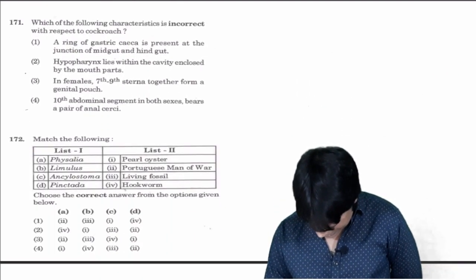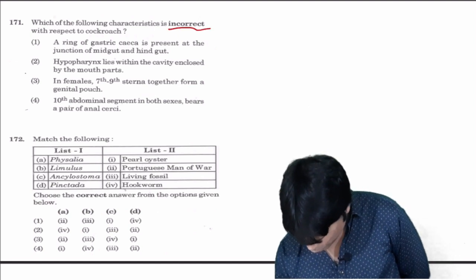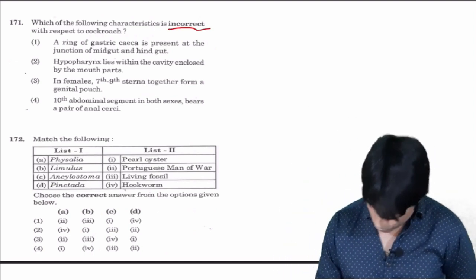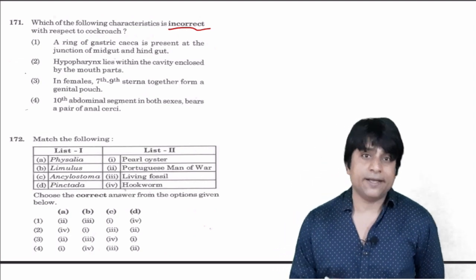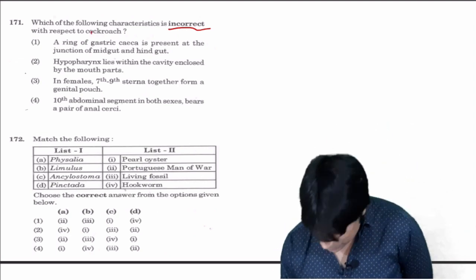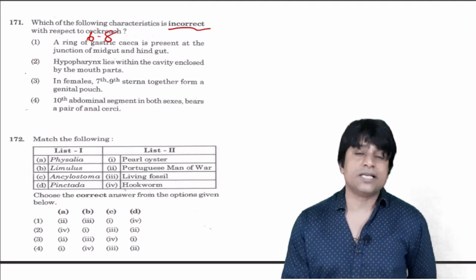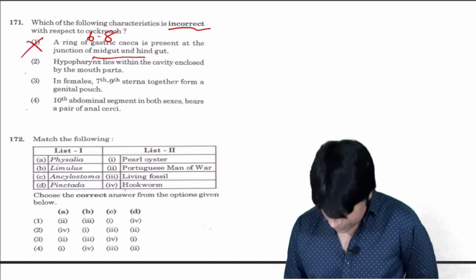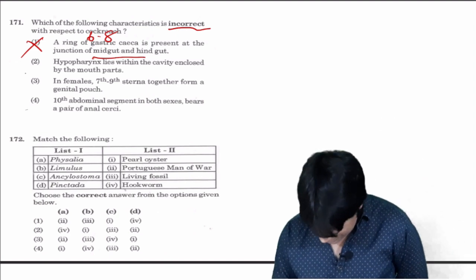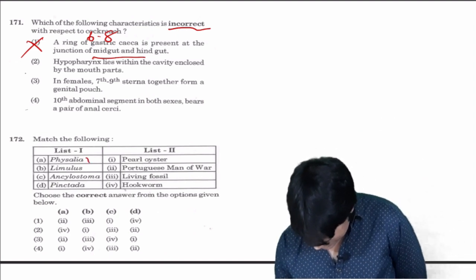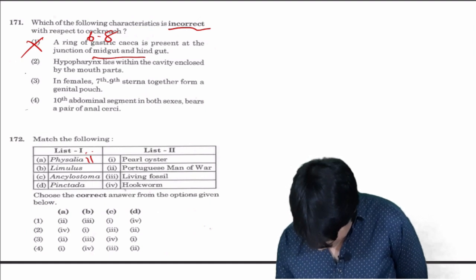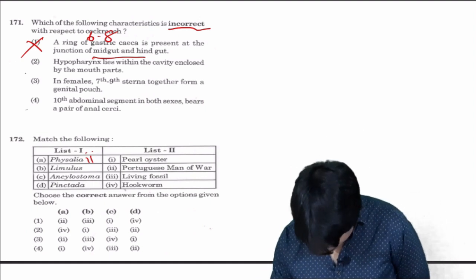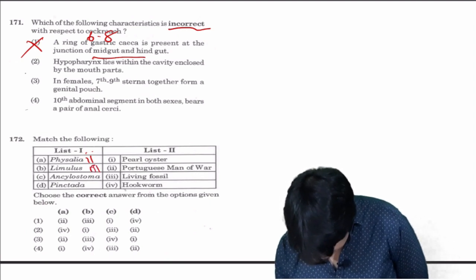Which of the following characteristic is incorrect with respect to cockroach? Ring of gastric caeca - gastric caeca are not ring, there are six to eight gastric caeca present at the junction of foregut and midgut, so it is wrong. First one is the wrong answer. Next, Physalia is Portuguese man of war, two. Limulus is living fossil, three. Ancylostoma is hookworm, four. Pinctada is pearl oyster, one. Your answer is three.